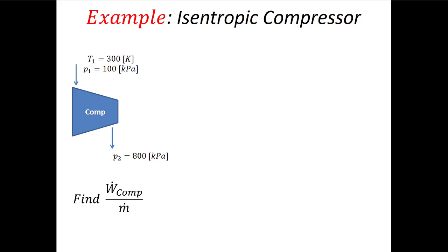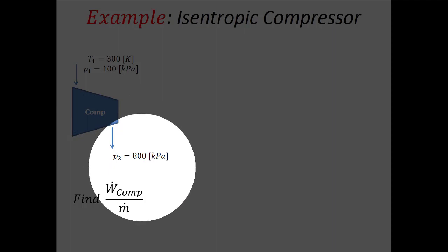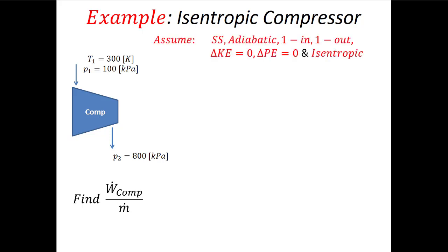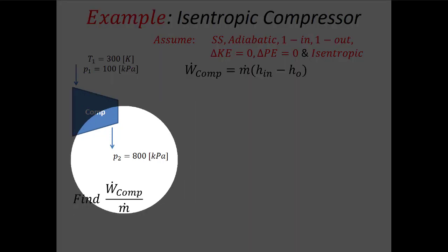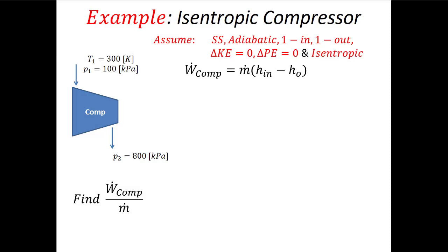Now an example: we have a compressor — like a pump but for an ideal gas — whose purpose is to increase the pressure. The ideal gas enters at 300 K and 100 kPa, and exits at 800 kPa, so we increase pressure from 1 bar to 8 bar. The problem asks for power consumed divided by mass flow rate. We assume steady state, adiabatic, one inlet, one outlet, negligible kinetic and potential energy changes, and an isentropic process. From the first law, the power consumed equals m-dot times (h_in − h_out).